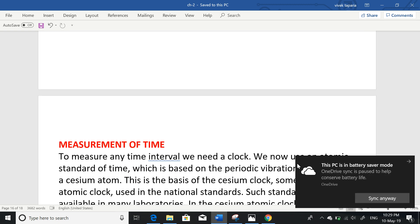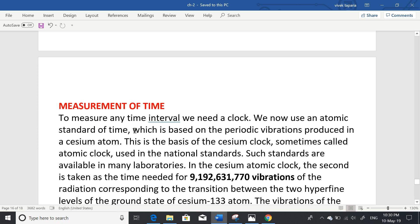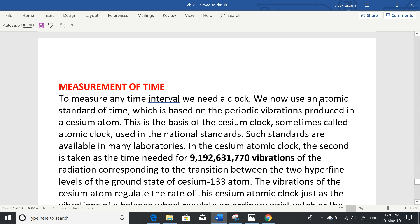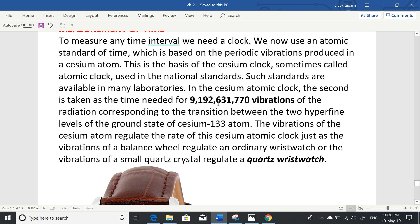Now we talk about measurement of time. One second is taken as time needed for 9,192,631,770 vibrations of the radiation corresponding to the transition between two hyperfine levels of the ground state of cesium-133 atom.